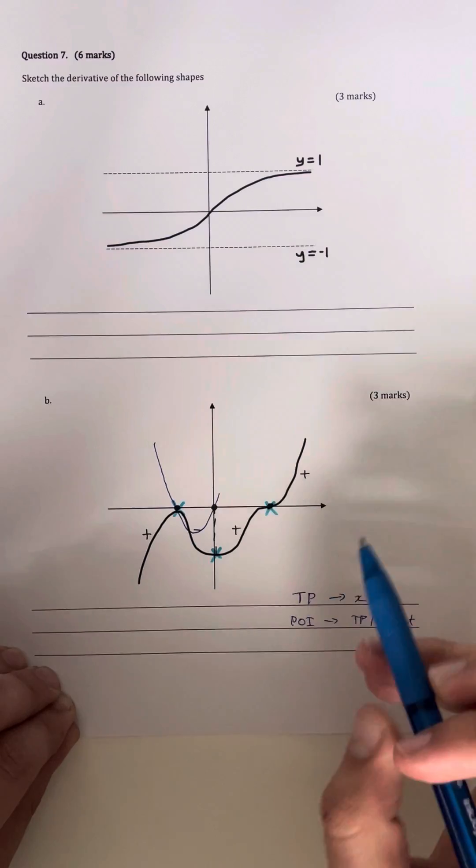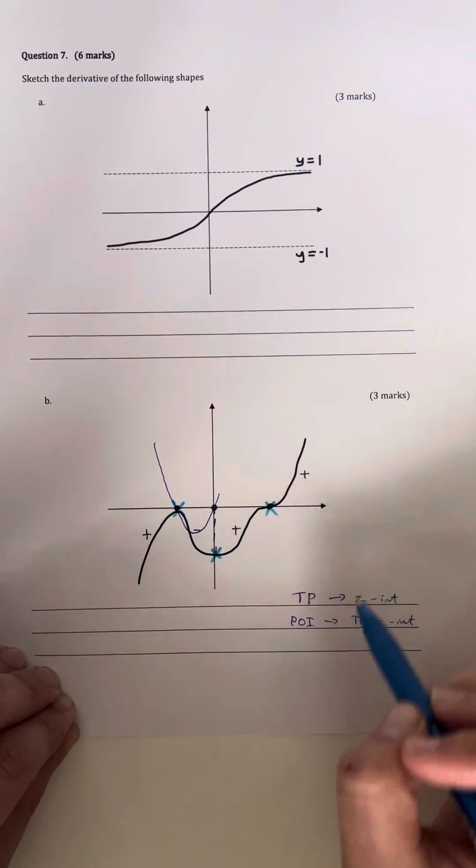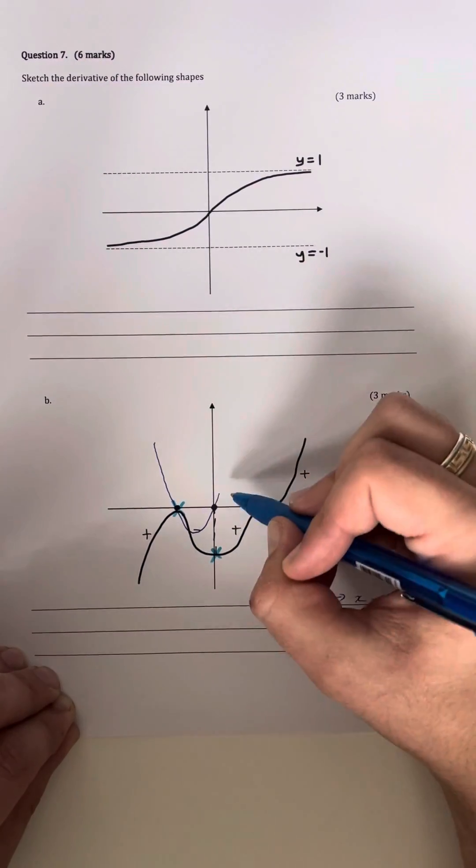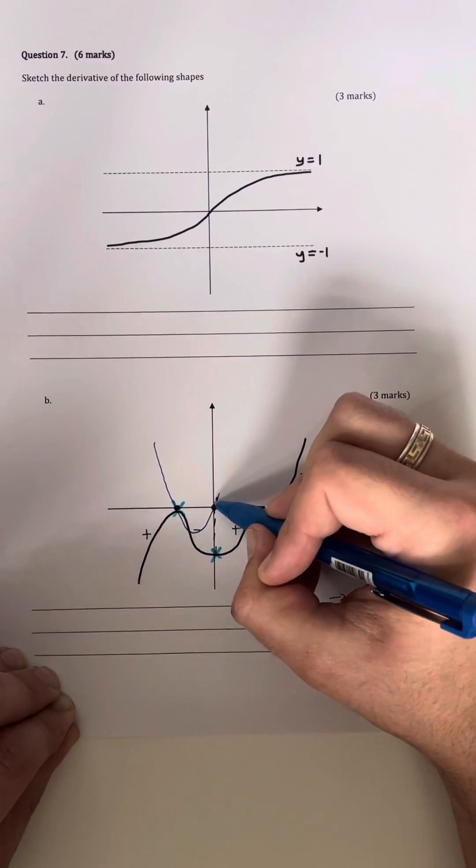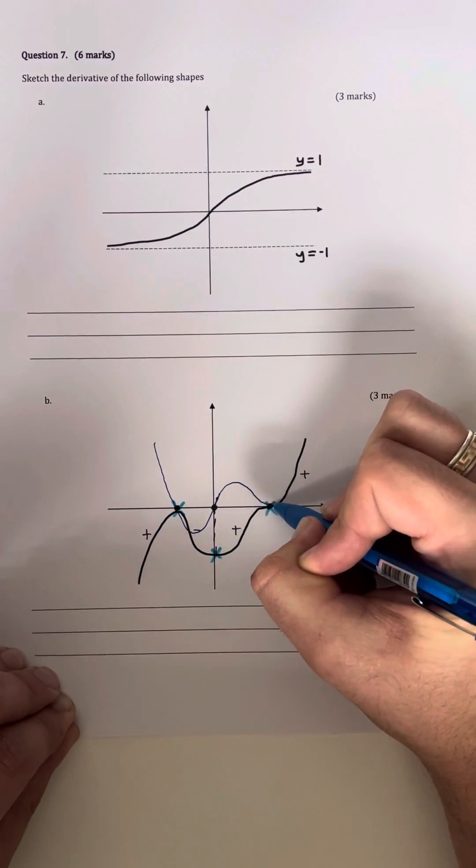Now point of inflection is a bit different because I remain positive on either side of my point of inflection. So what I need to do is I need to have the turning point just scraping against the x-axis and then bouncing back up again. So something along the lines of this.